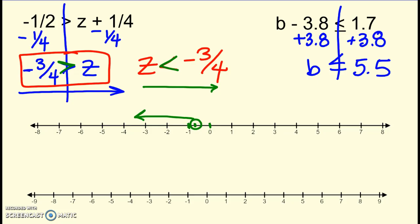Okay, and then this one, I have B is less than or equal to 5.5. My variable's on the left. I can read it fine from left to right. So B is less than or equal to 5.5. So here's 5.5 right in between 5 and 6. Anything smaller or equal to, so it includes 5.5 and anything to the left.